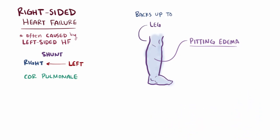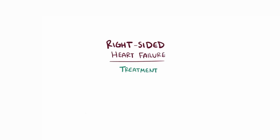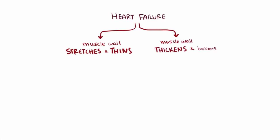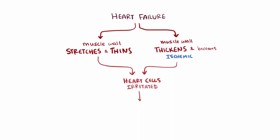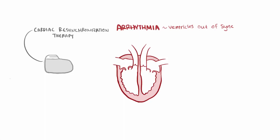Fluid that backs up into the interstitial space of the soft tissue of the legs causes pitting edema, where the tissue is visibly swollen and when you apply pressure it leaves a pit that takes a while to return to its original place. This generally affects the legs in most people, since gravity causes fluid to pool in the dependent parts of the body — the legs when standing and the sacrum or lower back when lying down. Right-sided heart failure is treated similarly to left-sided, often with ACE inhibitors and diuretics. With heart failure, the muscle wall can stretch and thin out or thicken and become ischemic, irritating heart cells and leading to arrhythmias, which make the ventricles less able to pump blood out. Patients might be prescribed cardiac resynchronization therapy pacemakers to stimulate the ventricles to contract at the same time and potentially improve blood output.